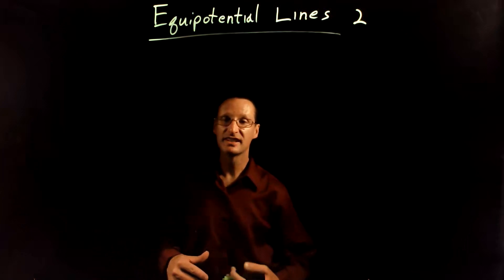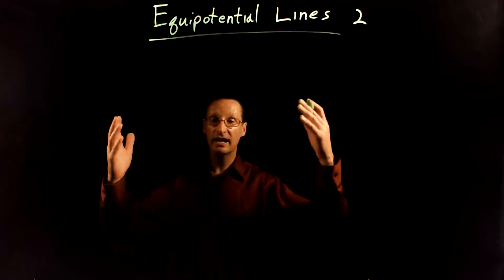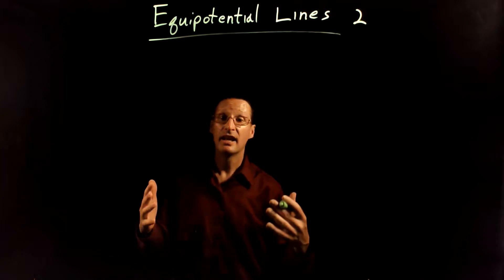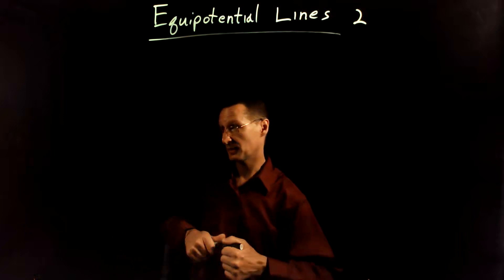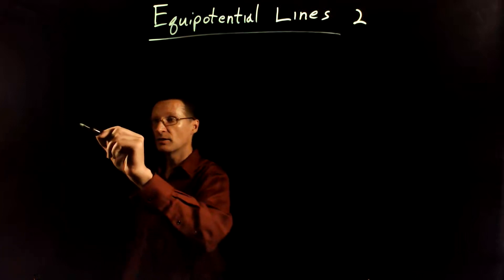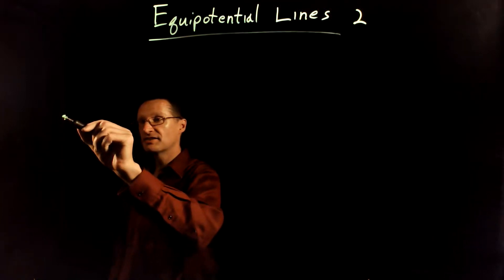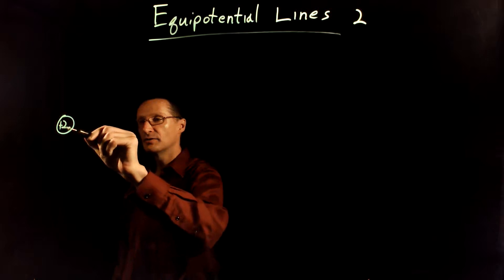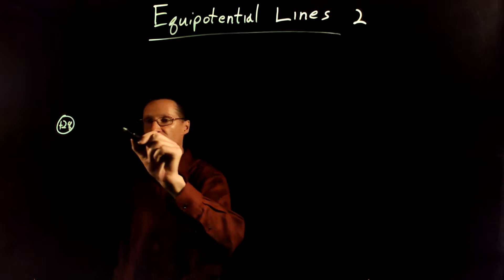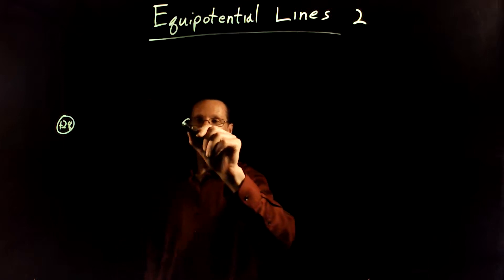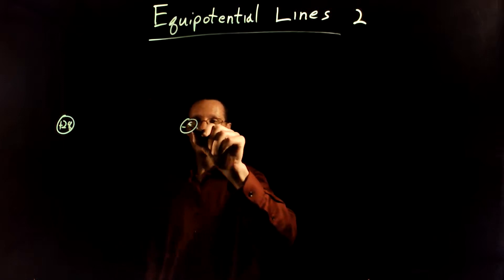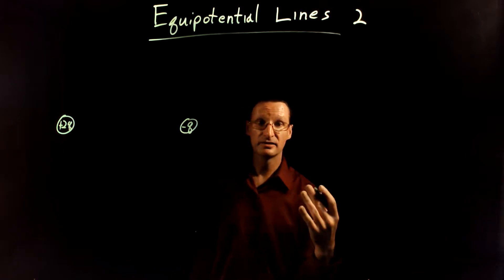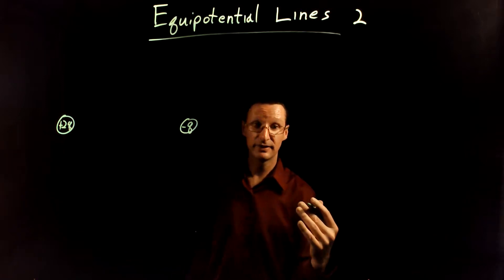Hey there, awesome physics students. Let's talk about equipotential lines again. I have a few more examples I want to talk about. Let's imagine that you have a positive 2q charge and a negative q charge. What do the equipotential lines look like for this configuration?